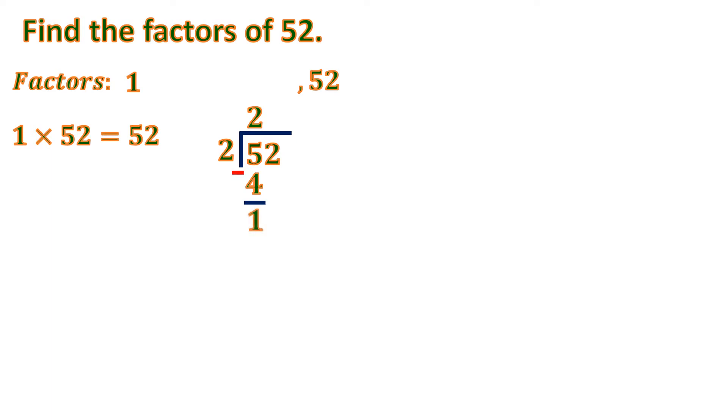So 5 minus 4 is 1, bring down 2. 12 divided by 2 is 6. So 6 times 2 is 12. Then subtract. So we'll get 0. So that means 2 times 26 is 52. So we'll put it there and put the factors 2 and 26.